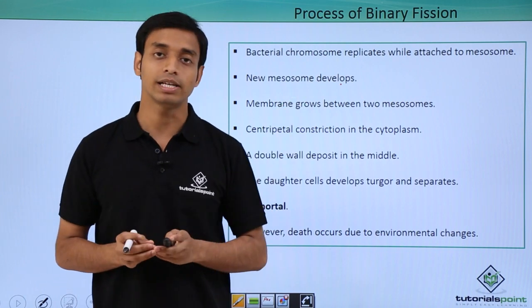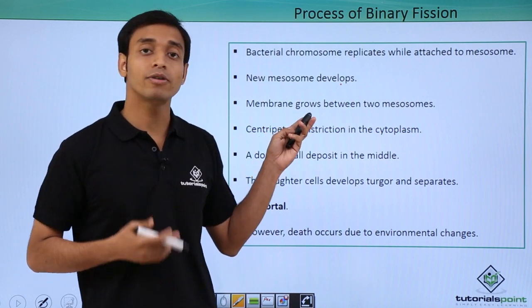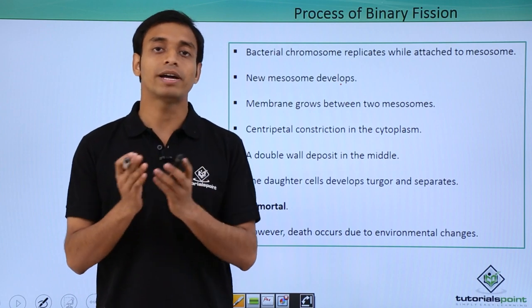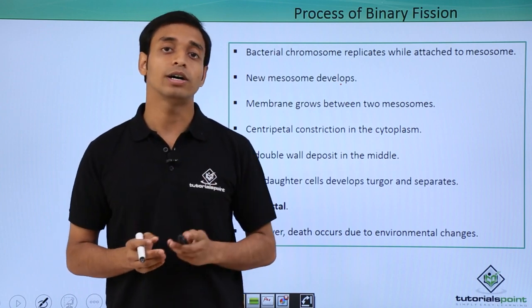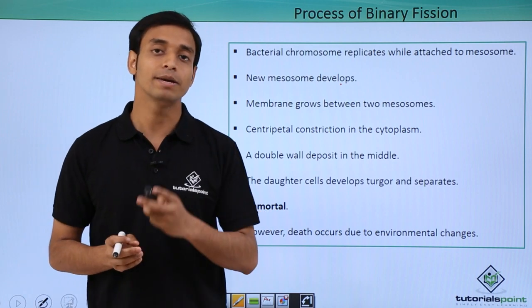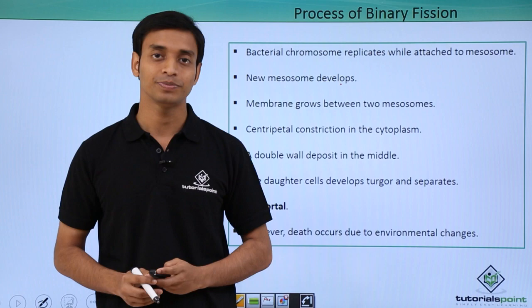In this video, we have talked about the type of reproduction which is binary fission. We have also discussed how this binary fission happens, and we have discussed an important point: why these cells can be called immortal cells. I hope you have understood and liked this video. Thank you.